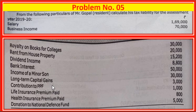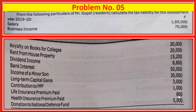Deductions eligibility: contribution to PPF - eligible for section 80C; life insurance premium paid - 80C eligible; health insurance premium paid - 80D eligibility, so maximum 25,000; 800 full amount allowed. Donation to national defense fund - 80G deduction, without limit, 100 percent deduction.